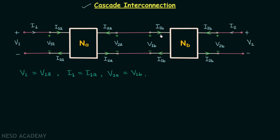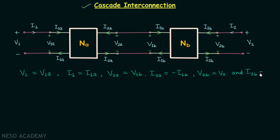They are in the same wire but in opposite direction, so current I2a is equal to negative of current I1b. Moving further, voltage V2b is equal to voltage V2, and current I2b is equal to I2.